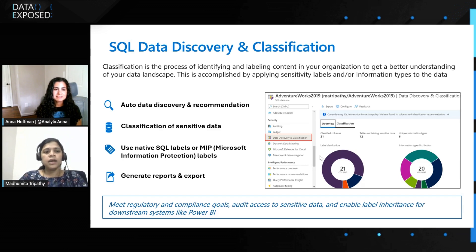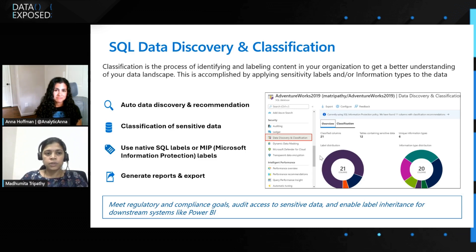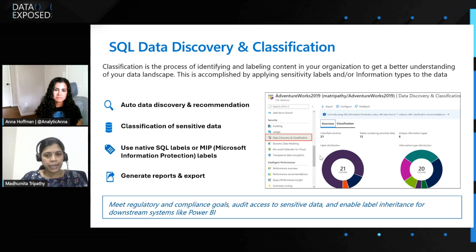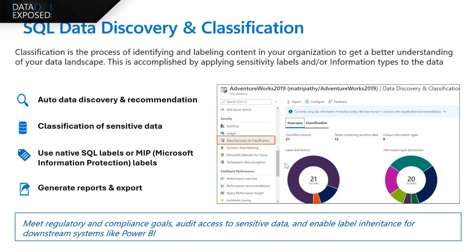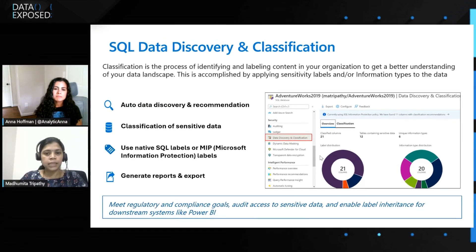This is a security feature, and you can categorize it in three stages. First, if you have no understanding of what sensitive data is in your database, you can use this built-in feature in the SQL engine — you don't need to pay extra. When you go to the portal, you see the data discovery and classification blade. Once you click on it, the recommendation engine automatically scans the database and gives you recommendations on sensitive columns it finds. The recommendation engine works based on the column name, not the actual data stored in the column.